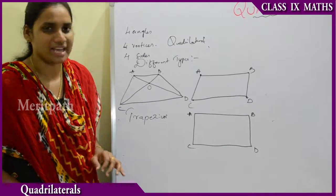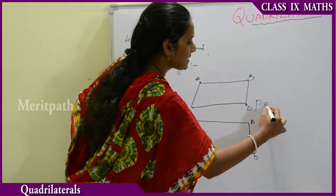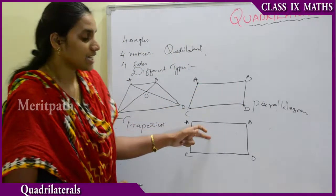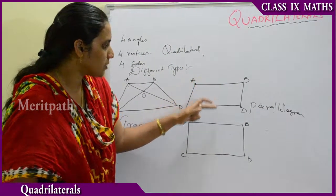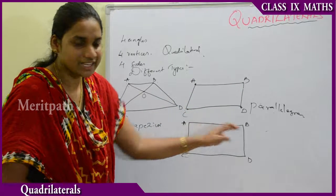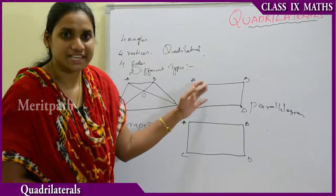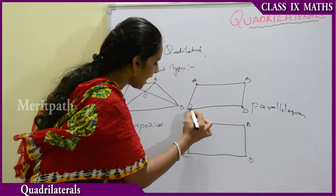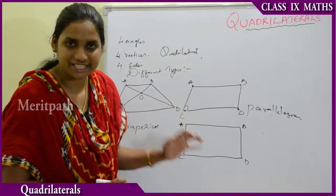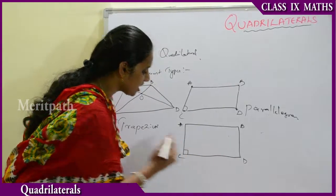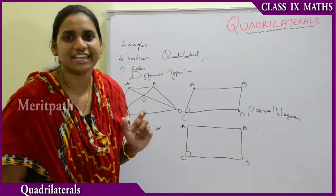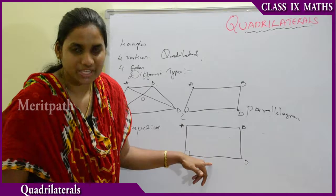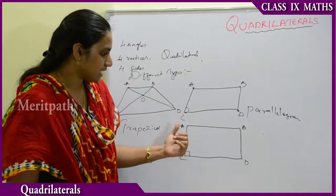If only one pair of opposite sides — say AB and CD — are parallel to each other, the shape formed is known as a trapezium. If both pairs of opposite sides are parallel to each other, the shape formed is known as a parallelogram.